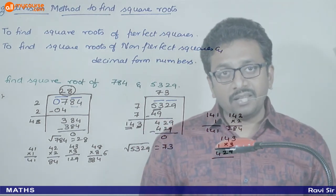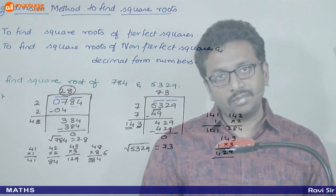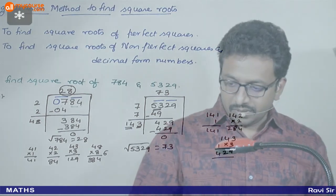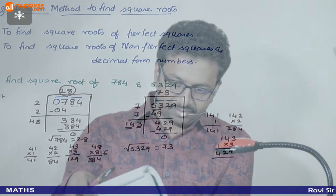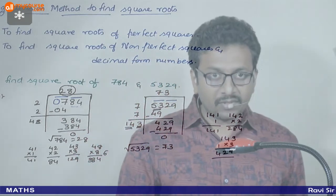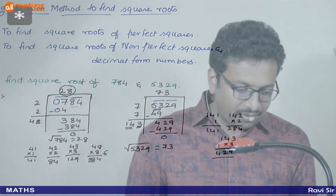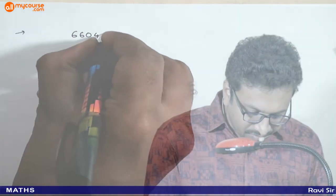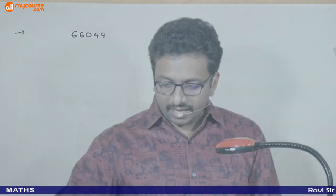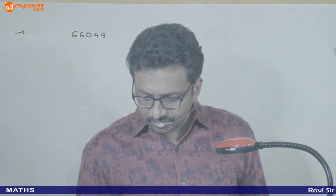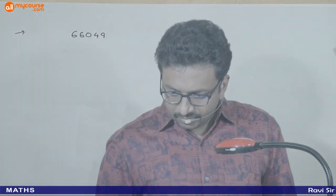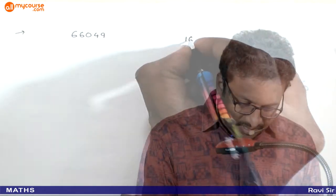I hope this method is clear. Let us do two more examples with slightly larger numbers. The next numbers we are going to find the square roots of are 66049 and 16384.